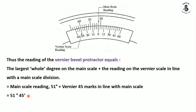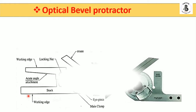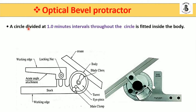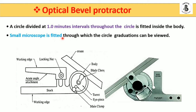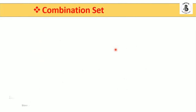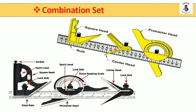The optical bevel protractor has a similar geometry, but in that case the circle is divided at one-minute intervals throughout, and it is fitted inside the body. A smaller microscope is also fitted for accurate viewing of the graduations, and the adjustable blade is clamped to the rotating member. In a combination set, you can perform a number of measurements using a steel rule, square head with spirit level, center head, and bevel protractor — all these attachments are used for measurement.